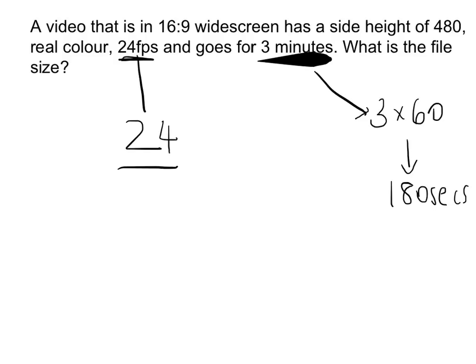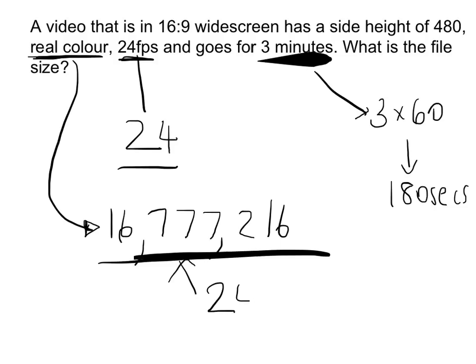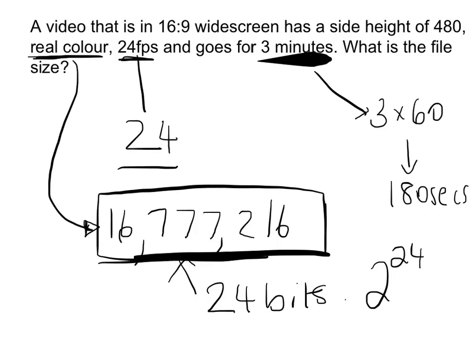The next thing we need to do is figure out what the bit depth is and what the resolution is. In this case, it says that we are dealing with real colour. Real colour is a terminology used, and what it means is that there are 16,777,216 colours, which means the colour is real enough to not be able to tell the difference. Real colour is actually 24 bits, because 2 to the power of 24 is that massive number. You do need to know that real colour is 24-bit colour.